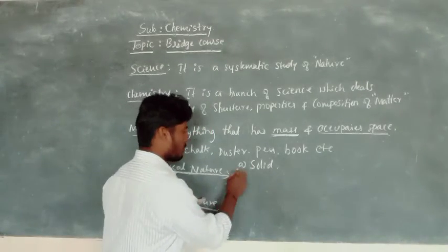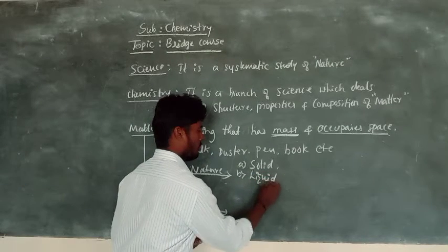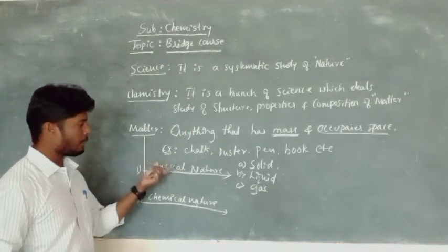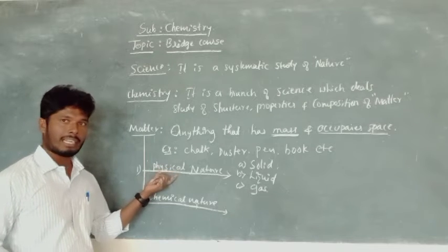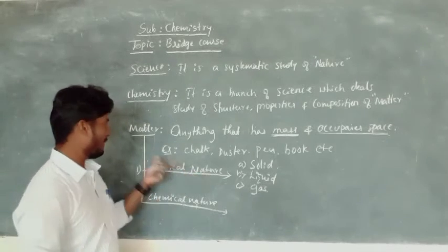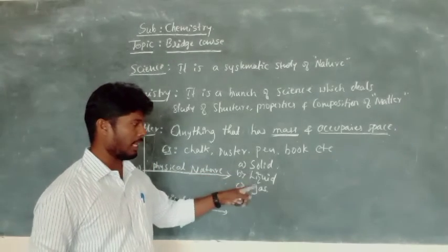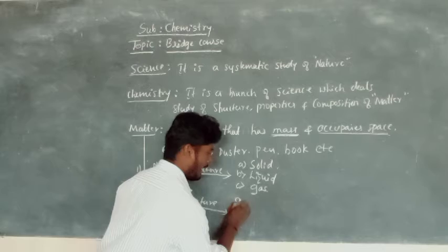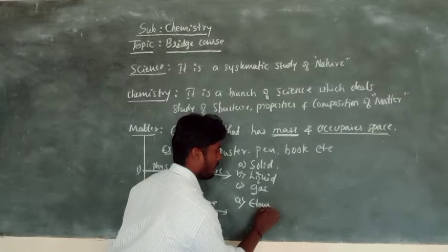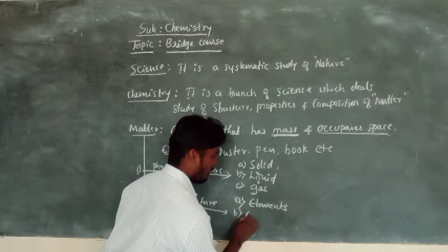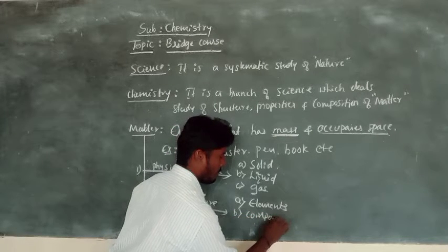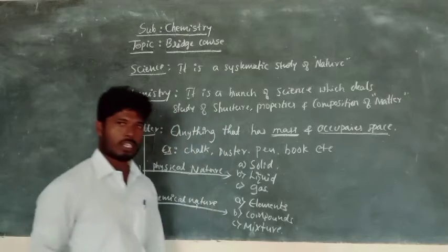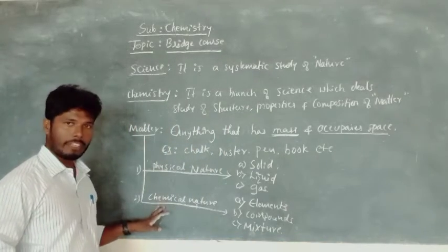It is classified into three different types: solids, liquids, and gases. These are three different types of matter on the basis of physical nature. Similarly, on the basis of chemical nature, this matter can be classified again into three types — those are elements, compounds, and mixture. These are the three different types of matter on the basis of chemical nature.